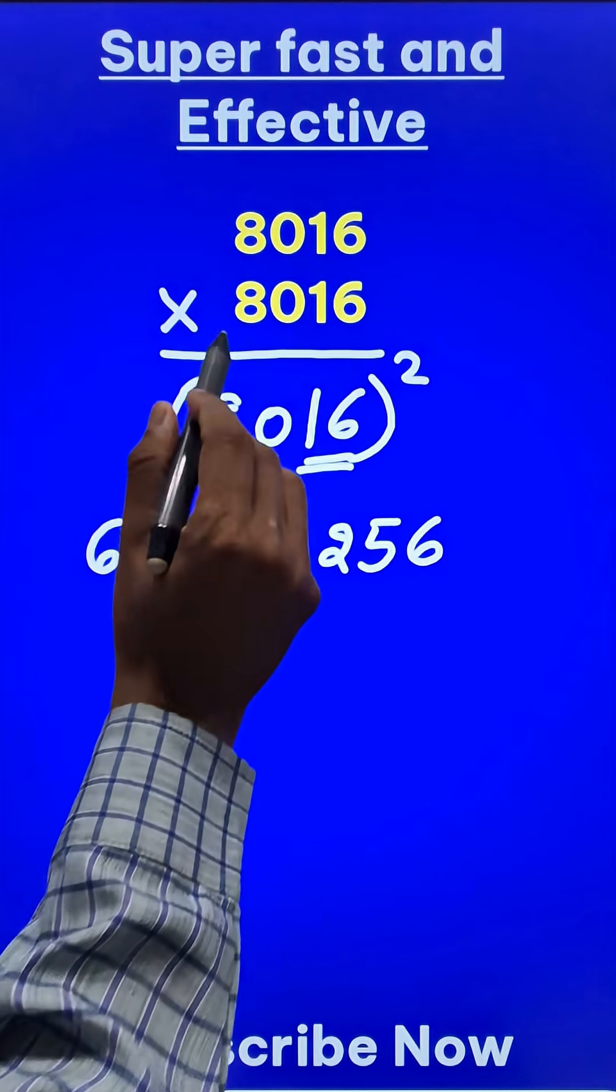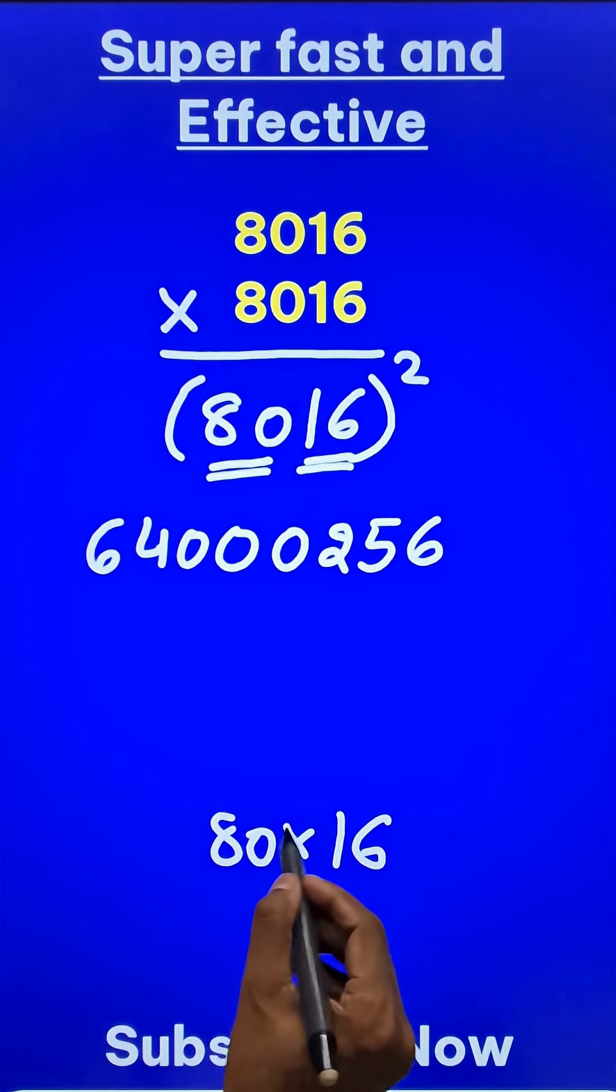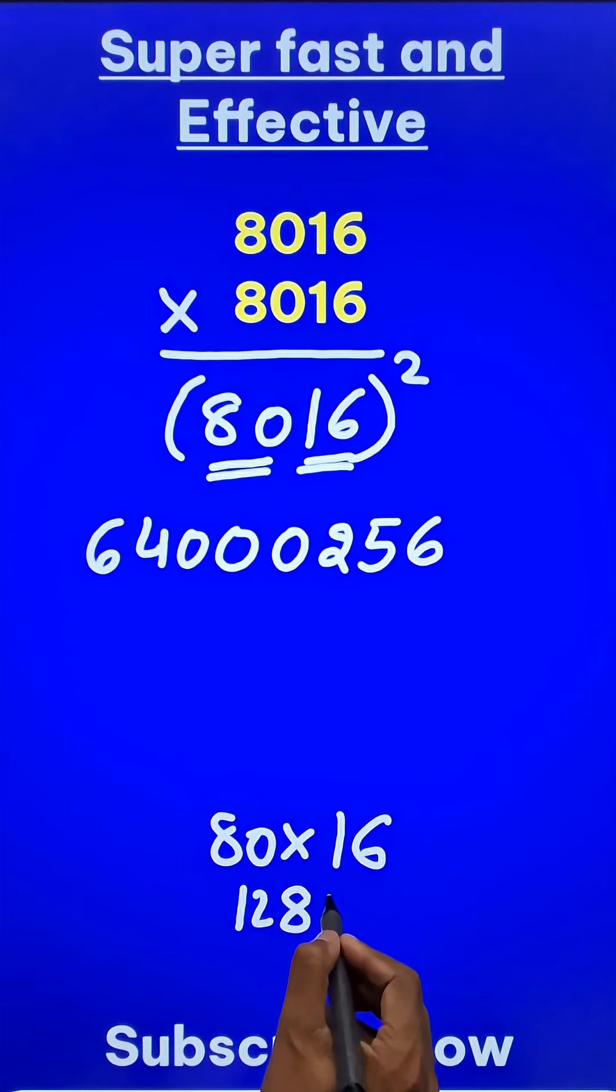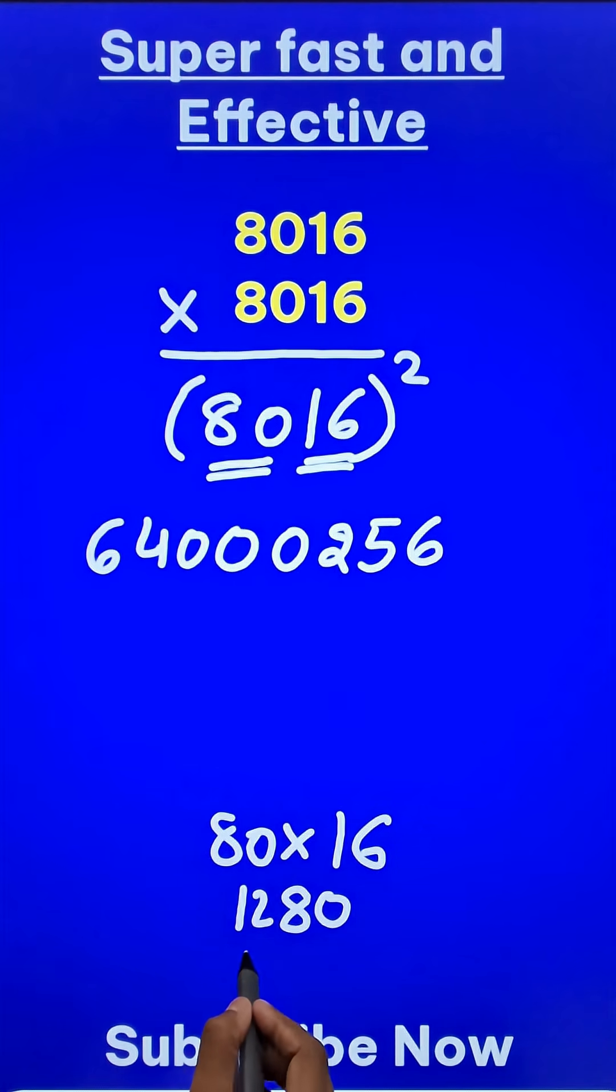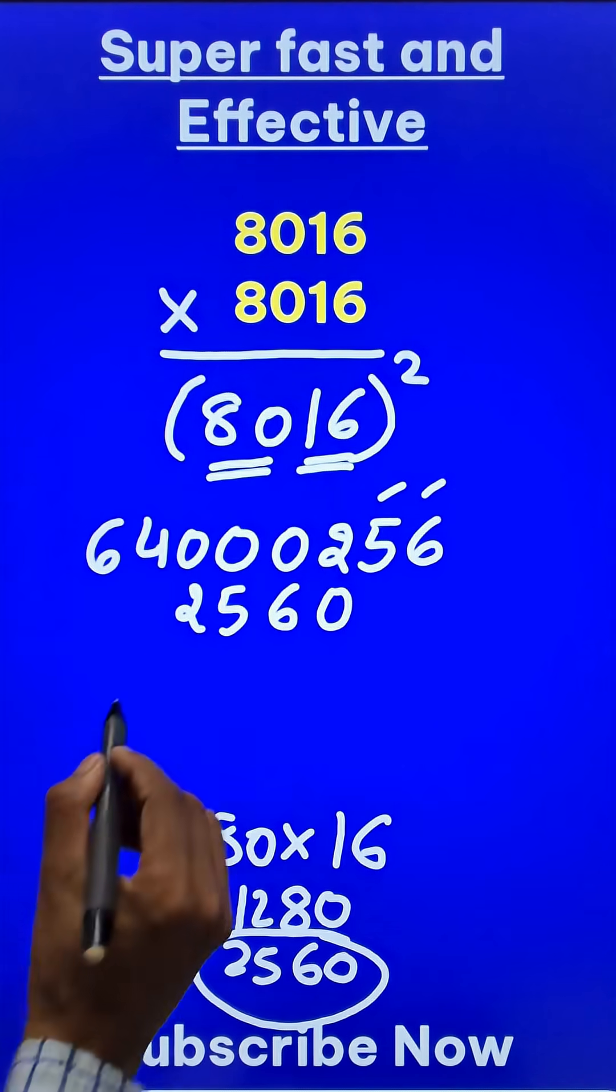After that multiply 80 by 16. So when you multiply 80 by 16 you are going to get 1280, so 128 and a zero, right? And double of this is 2560. Now where do I use this 2560? Leave two digits from the right hand side and write 2560 like this.